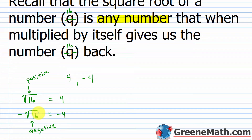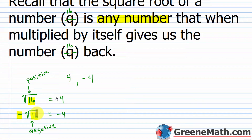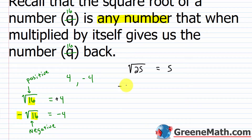The difference between the two is very slight. For the principal square root, we ask what positive number, when multiplied by itself, gives me 16? That's positive 4, since positive 4 times positive 4 is positive 16. For the negative square root, we ask what negative number, when multiplied by itself, gives me 16? That's negative 4. If you see the square root of 25, that's the principal square root — just 5. If you see the negative square root of 25, they're asking for negative 5.